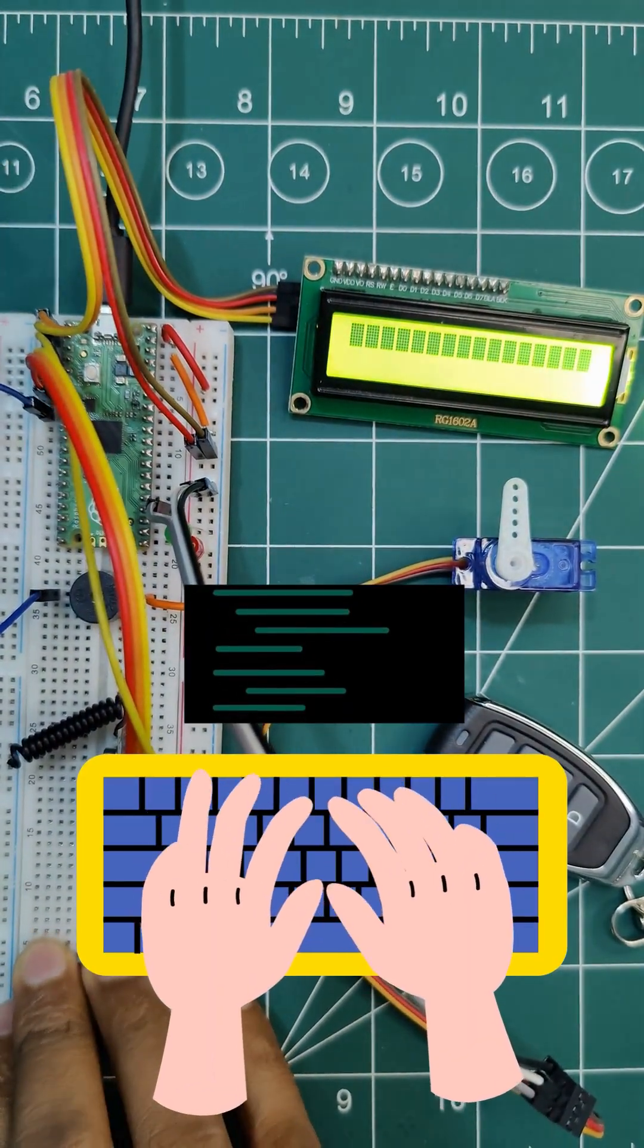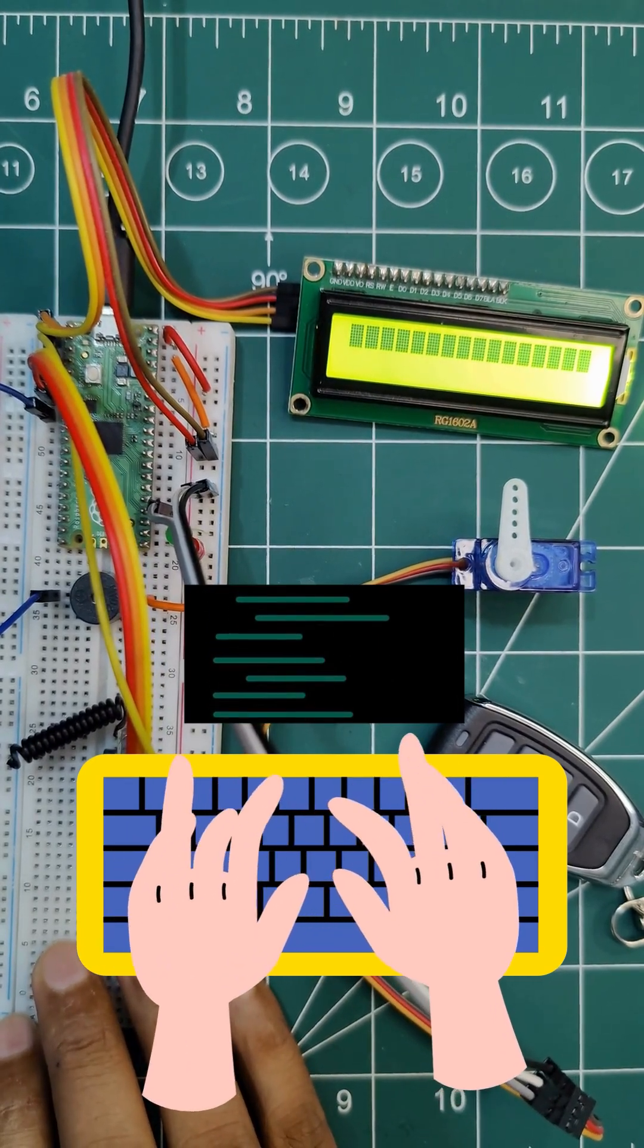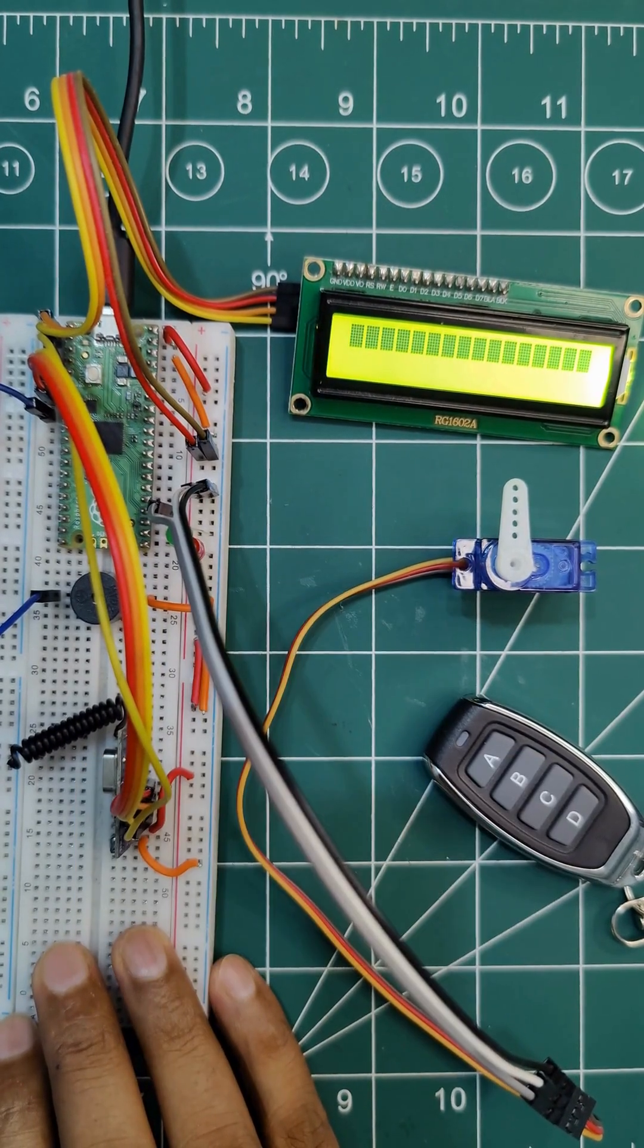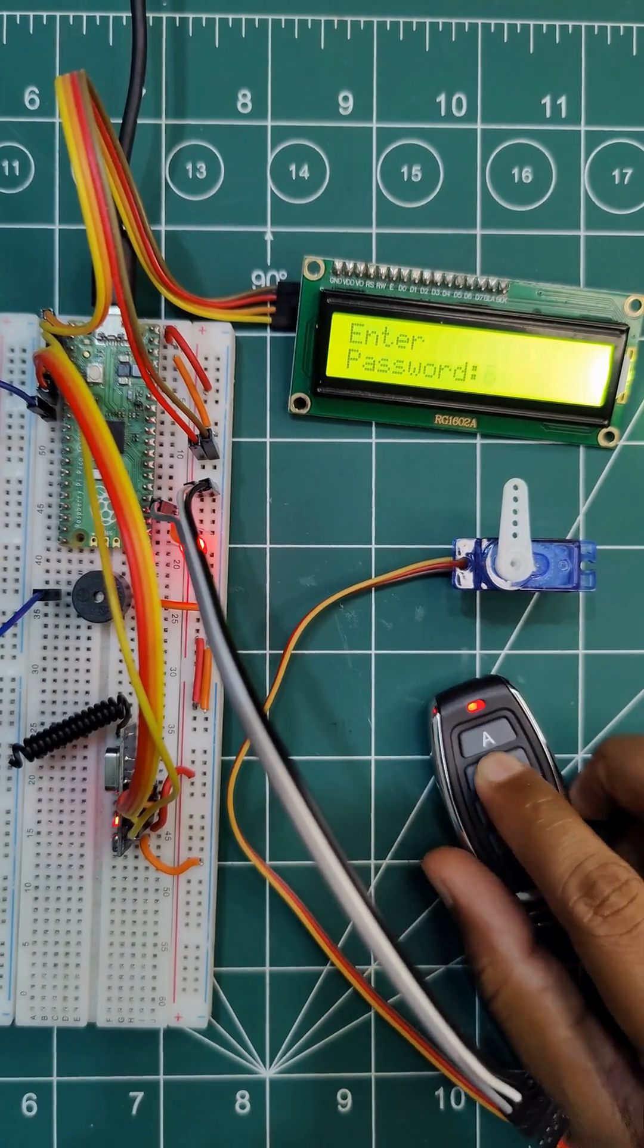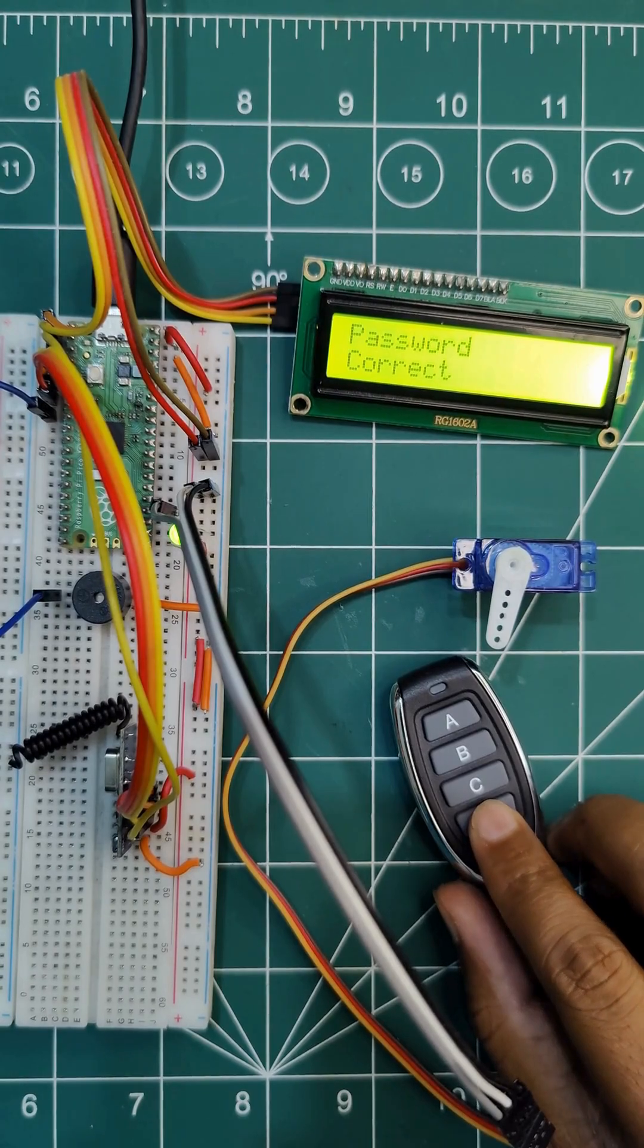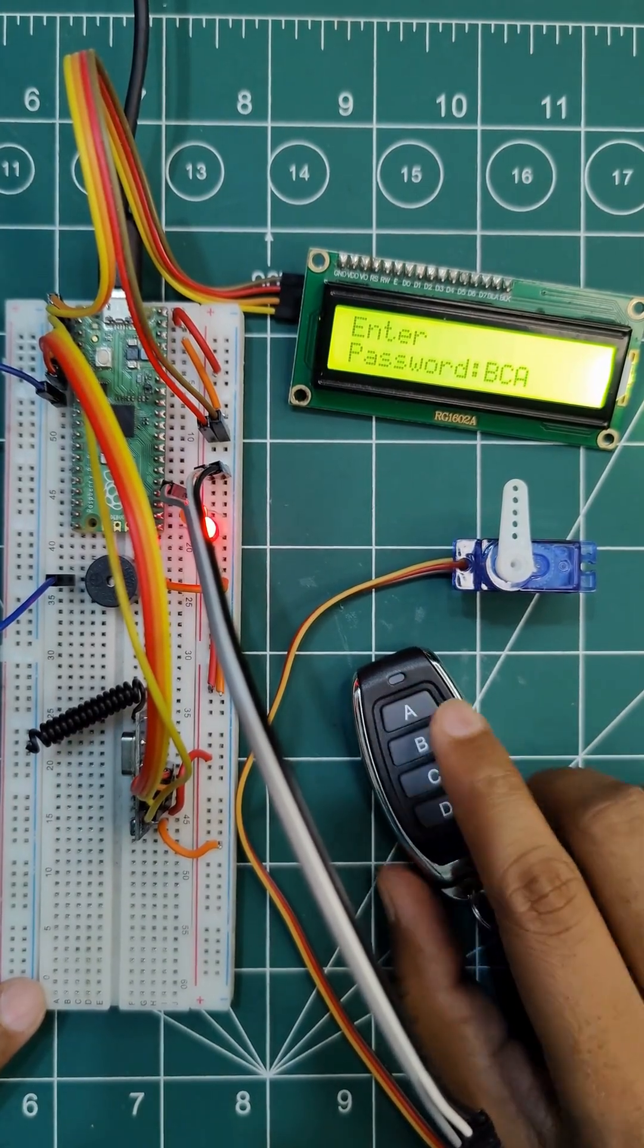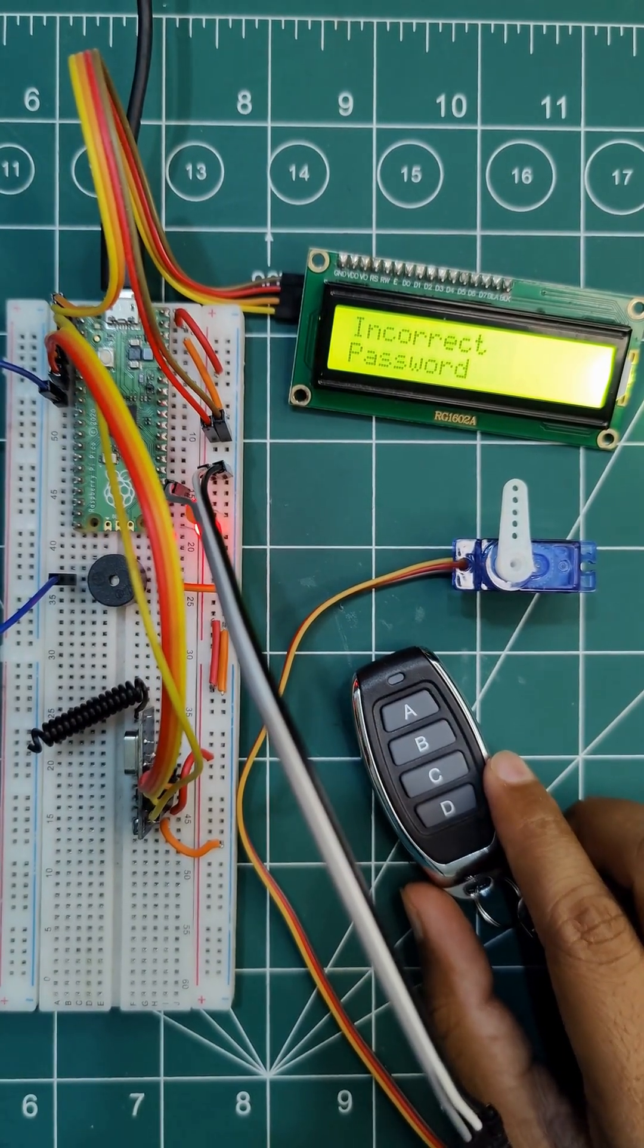Let's connect it and run the code. So I will connect. Let's enter the password BAD. Servo will open. And if I enter the incorrect password, the door will not open. Alright, thank you.